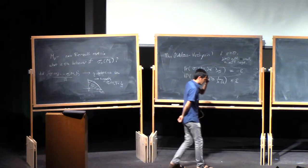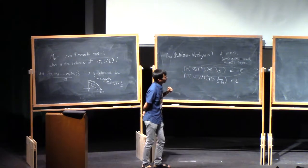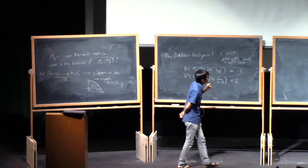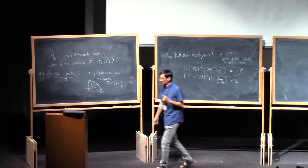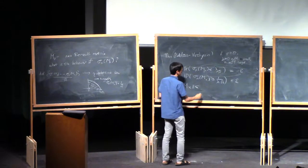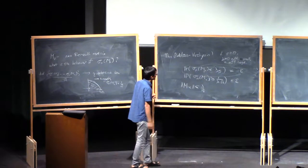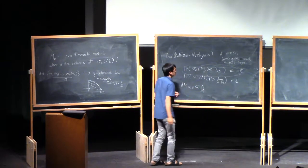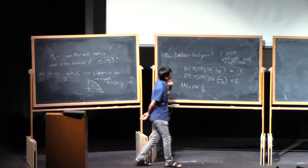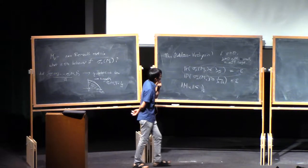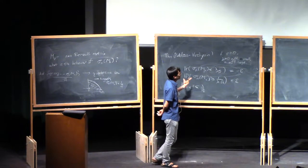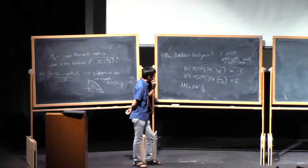For this type of result, the epsilon-net argument that works in the rectangular case doesn't work all that well here. The probability for an individual vector is not all that small, whereas the entropy is still exponentially big. So direct application of the epsilon-net argument is not effective. The problem is that there are just too many x's and you need a way to cut down the entropy to a more reasonable level.